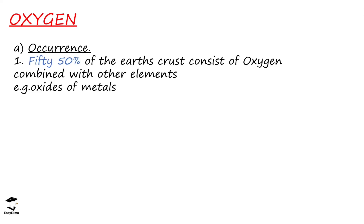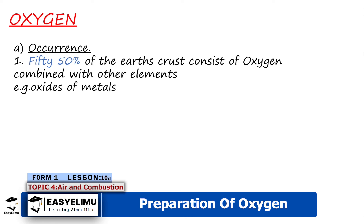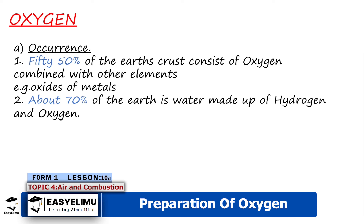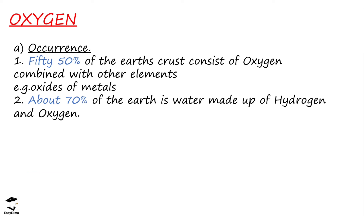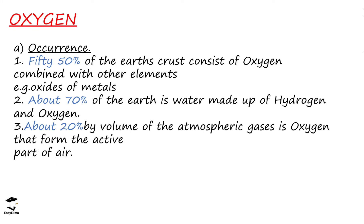Oxygen covers around 50 percent of the earth's crust and it mostly exists in combined states in metals. About 70 percent of the water on earth is made up of hydrogen and oxygen, and water covers most of the earth's surface. In the atmospheric gases, the percentage of oxygen is about 21 percent. So oxygen exists in different combined states.